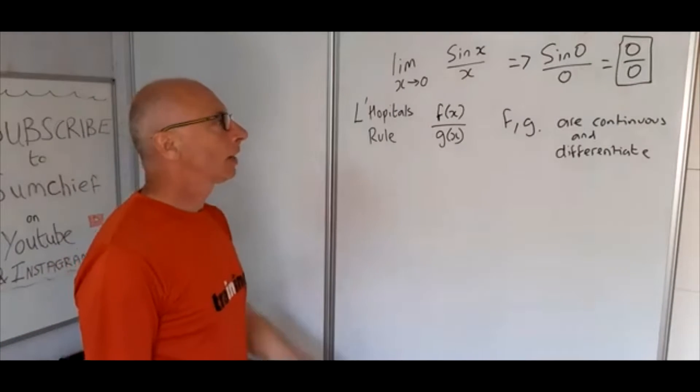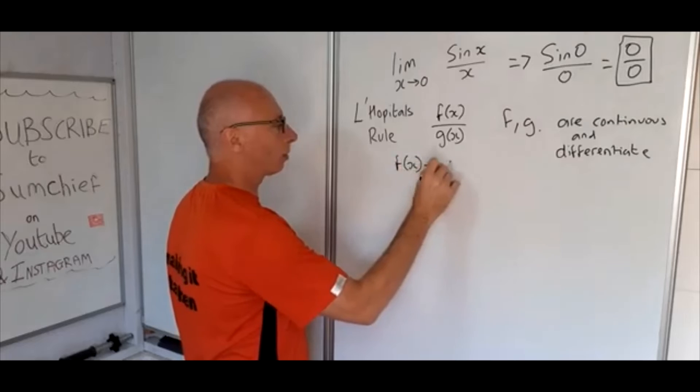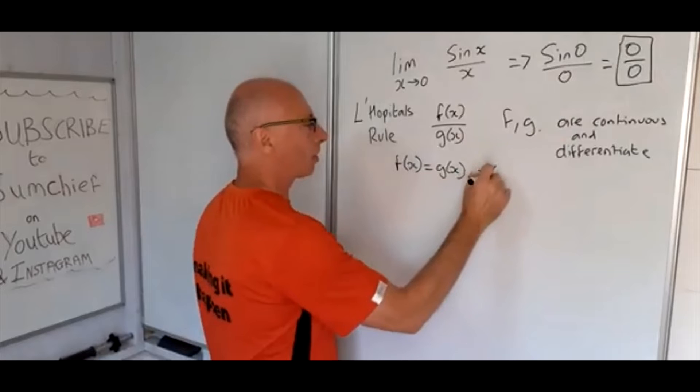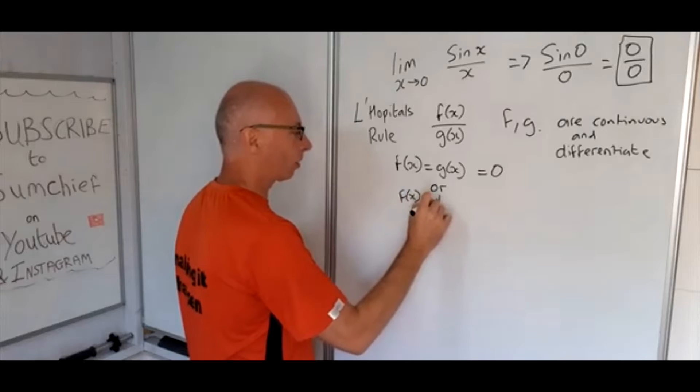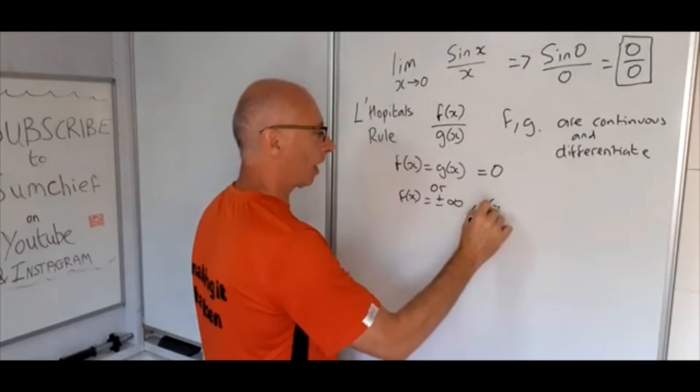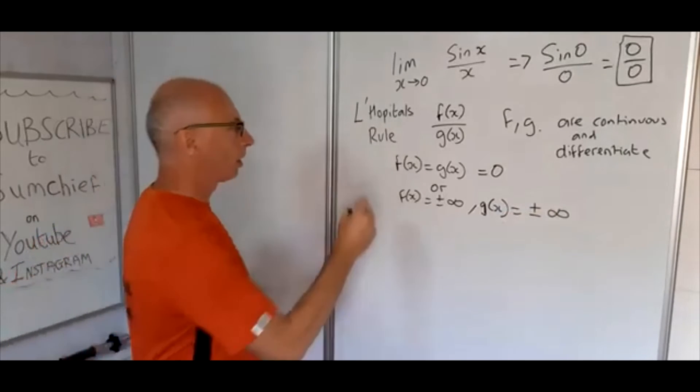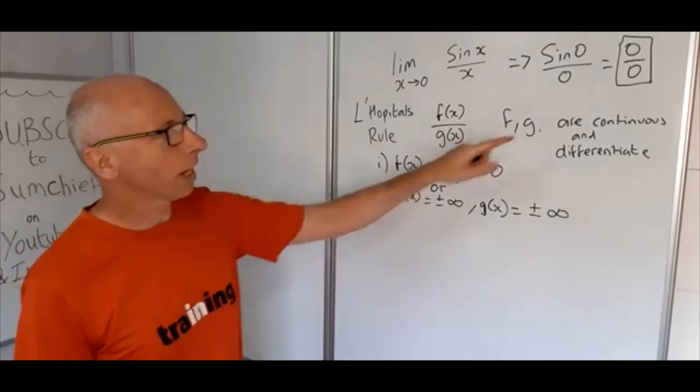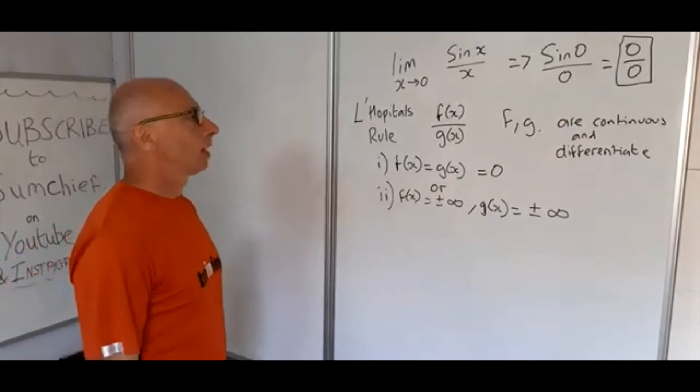And the other rule we have is that f of x and g of x both equal zero, or you can have f of x equals plus or minus infinity. So you need one or the other, part one or part two. In our case we've got a zero over zero case. So there we go, that's met.